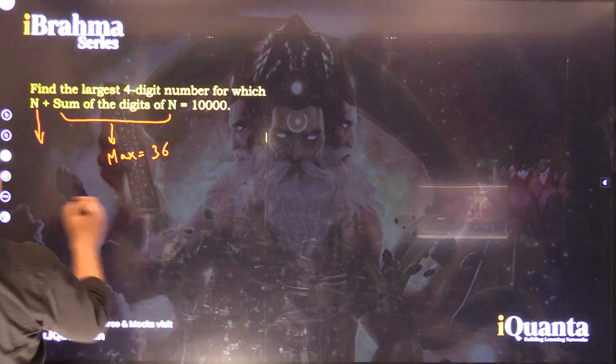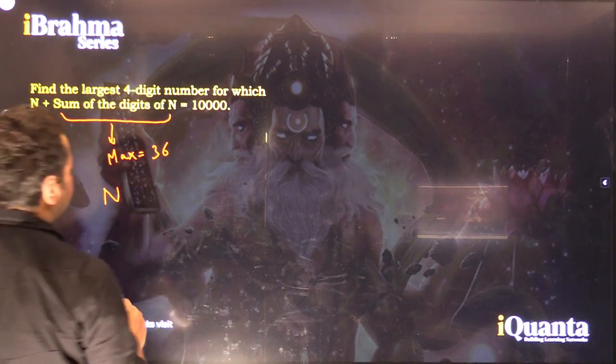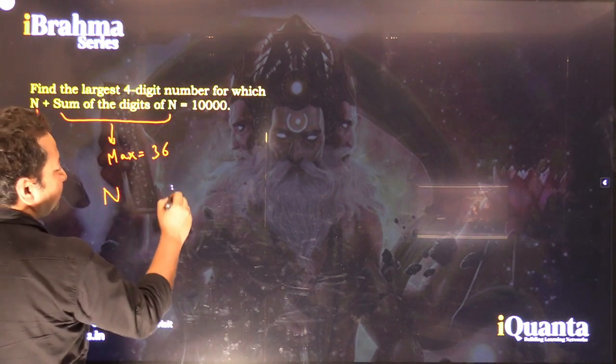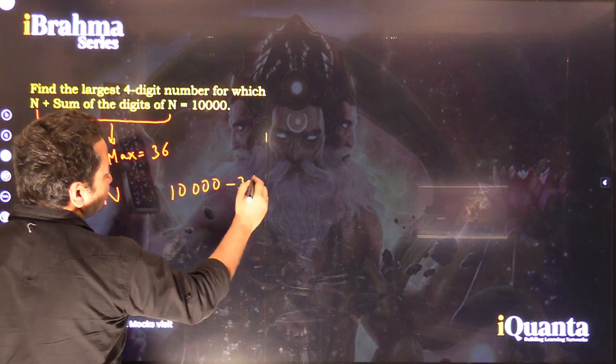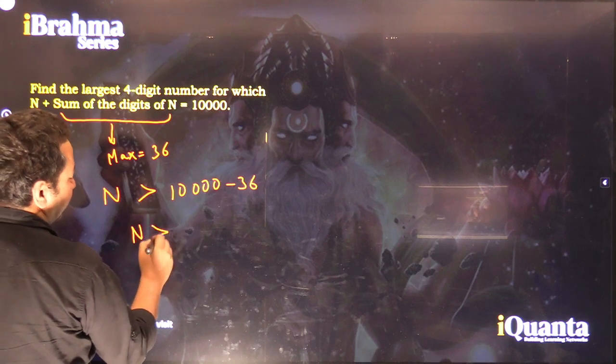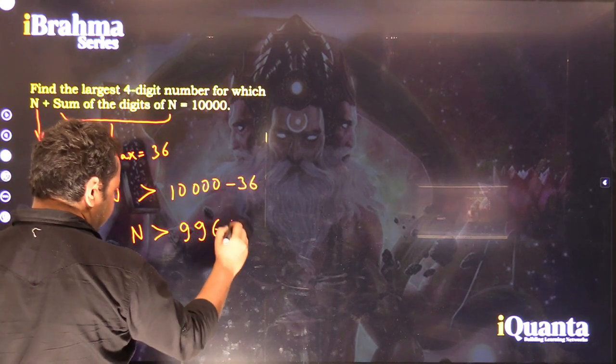Which also means that the number n should be greater than 10,000 minus 36, which means n has to be greater than 9964.